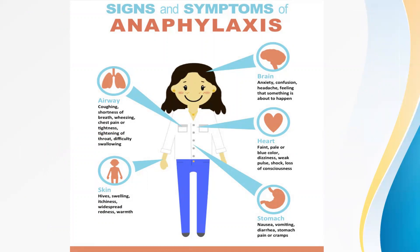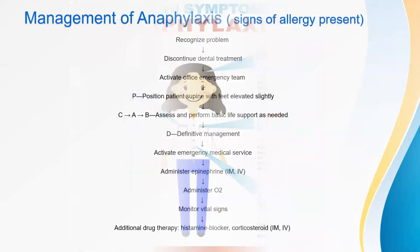Signs and symptoms of anaphylaxis: In the airway — coughing, shortness of breath, wheezing, chest pain or tightness, tightening of the throat, difficulty swallowing. In skin — hives, swelling, itchiness, widespread redness and warmth. In CVS — faintness, pale or blue color, dizziness, weak pulse, shock, loss of consciousness. In CNS — anxiety, confusion, headache, feeling that something is about to happen. In GIT — nausea, vomiting, diarrhea, stomach pain or cramps.